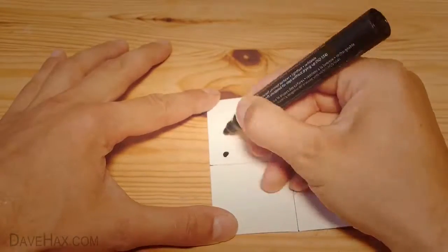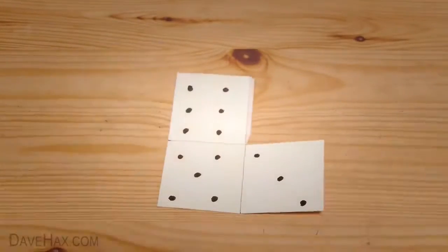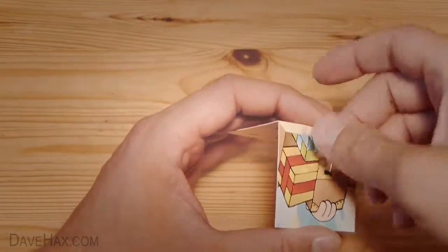But before we fix it, we're going to draw on some dots to make it look like a dice. Then bend it into shape, and use a couple of strips of tape to hold it in place.